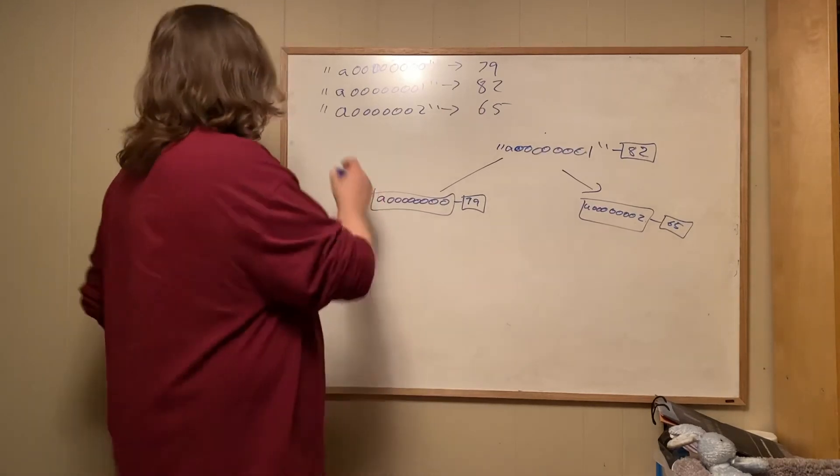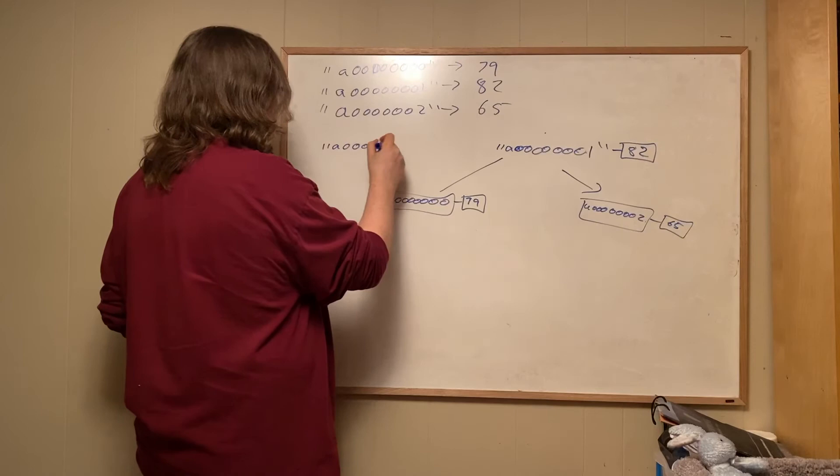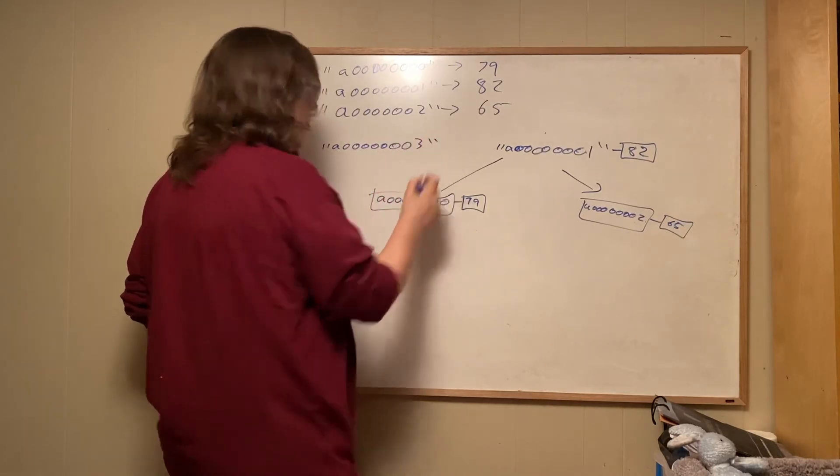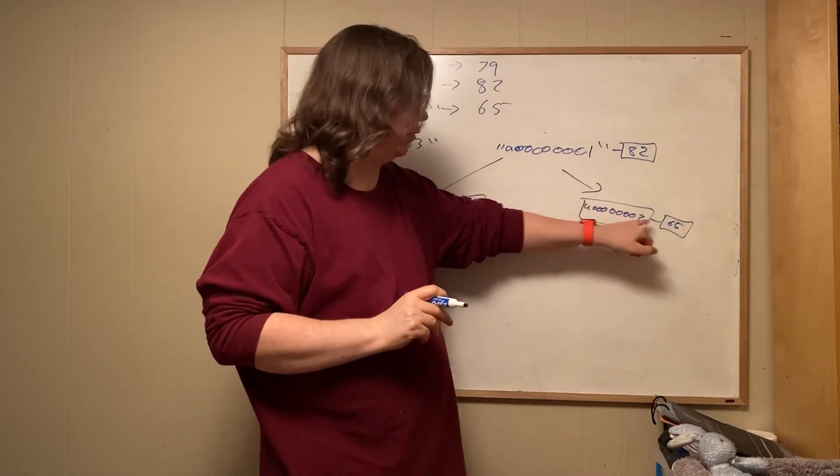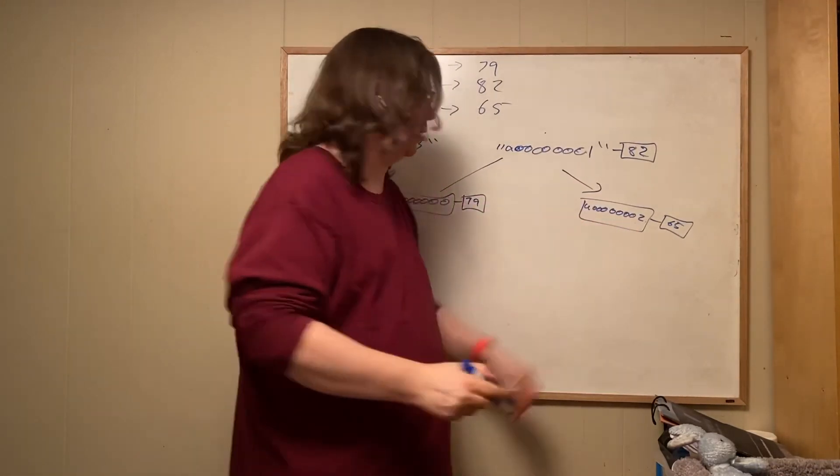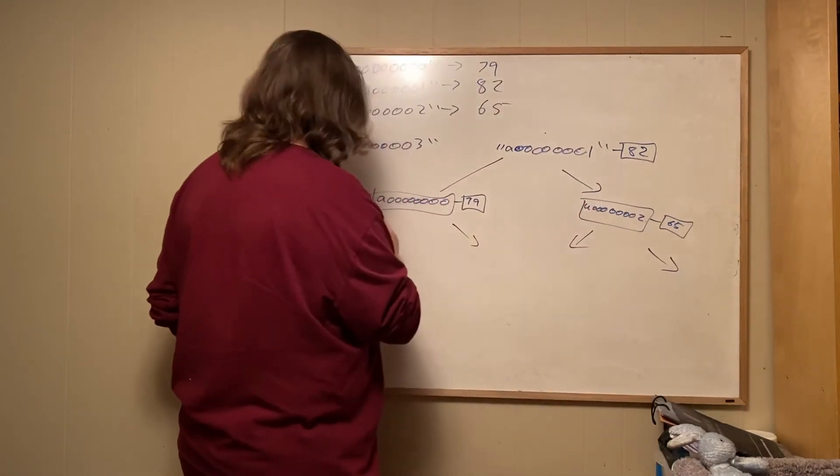So now if we went to look up A00003, we'd say it's greater than one. It hashes to three, remember? So it's greater than one, it's greater than two. It's not in there because the next thing here is nulls. So it doesn't exist.